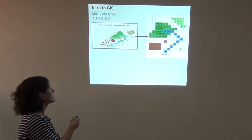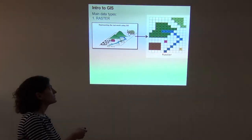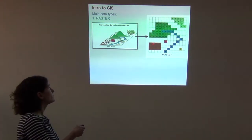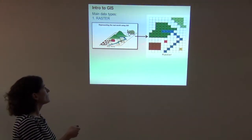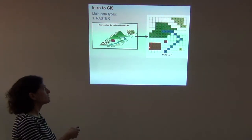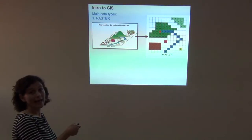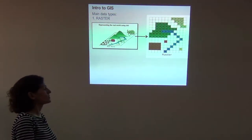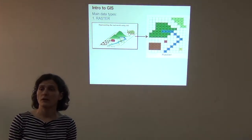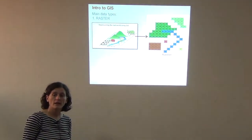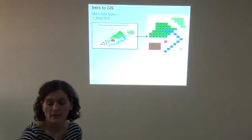With raster data, we represent features as cells in a raster. For example, here we have some agricultural land, and these pixels or cells all have the same value. Here we have mountains, and then a river, forest, and so on. Basically, it's like dropping a grid on a real landscape and creating a digital version of the real world. That's the raster option.